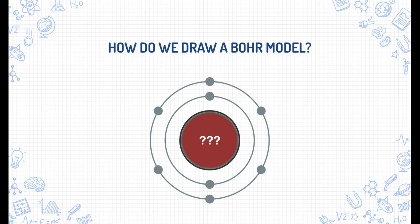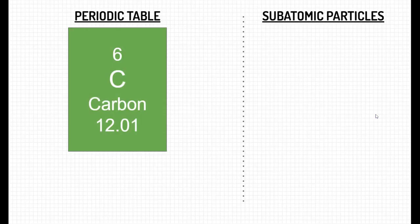So how do we draw a Bohr model? Well, before we do that, let's talk a little bit about how we know how many subatomic particles each element has from the periodic table. Let's take a look at carbon here.